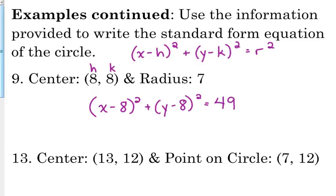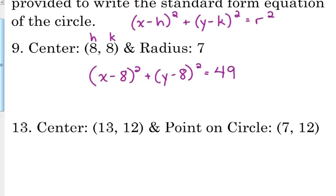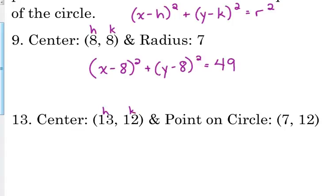Now number 13, we've got to do a little bit more work. We're given the center — that's good, we know h and k — but we're not given the radius. We're told here's a point on the surface. So we've got the center at (13, 12) and the point on the circle is (7, 12). From the center to a point on the circle, that is the radius length. So if we find the distance between those two points, we have then found the radius.